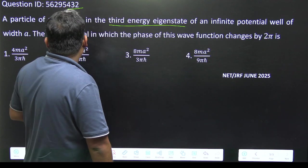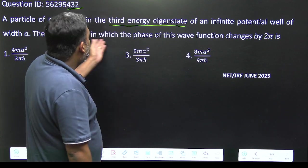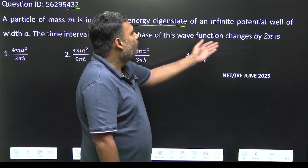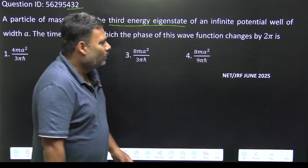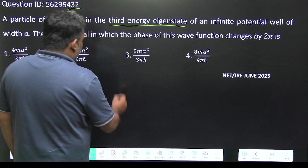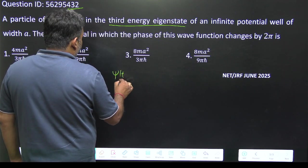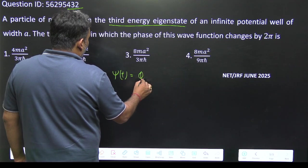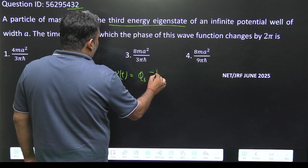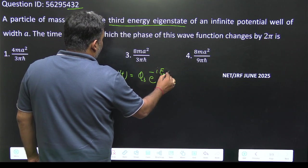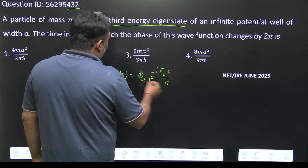Of infinite potential well of width a, the time interval in which phase of this wave function changes by 2π. We can easily see this. What will be ψ(t)? ψ(t) is equal to φ₃ e to the power minus i E₃ t upon ℏ.